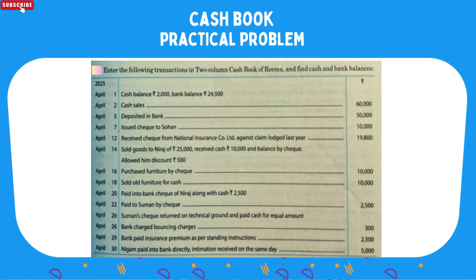Transactions are made in April 2025. Opening balances: cash balance and bank balance are given. Cash sale and deposit in bank. Issued cheque to Sohan. Received cheque from National Insurance Company against claim from last year. Sold goods to Neeraj for 25,000 — received cash 10,000 and the balance by cheque. Allowed him discount of 500.